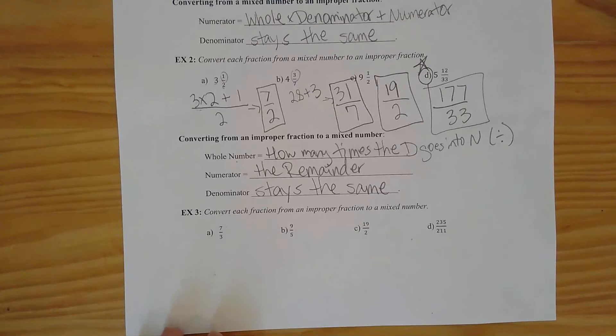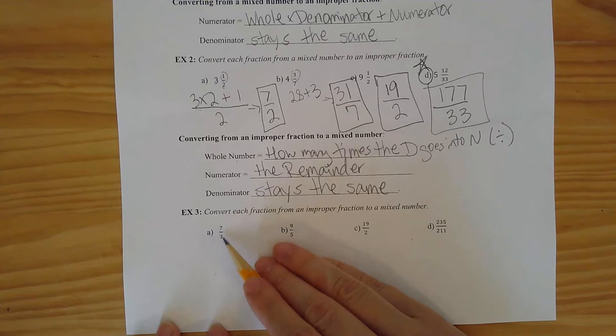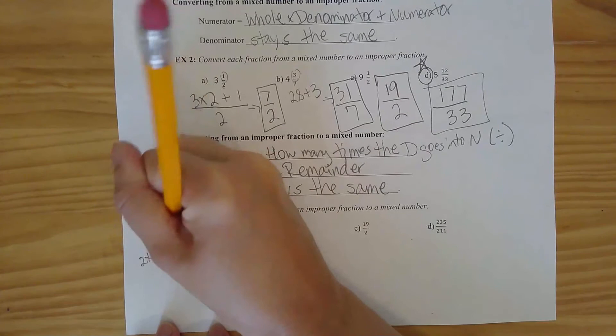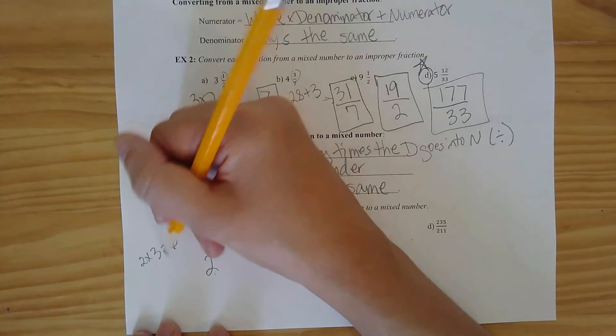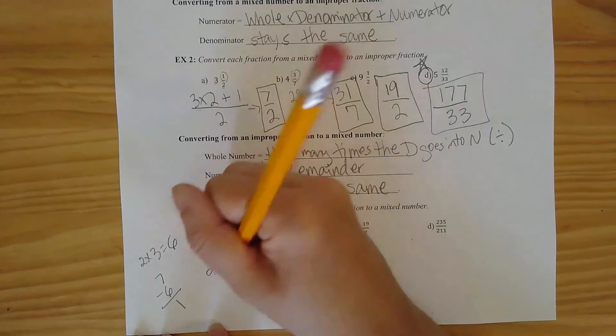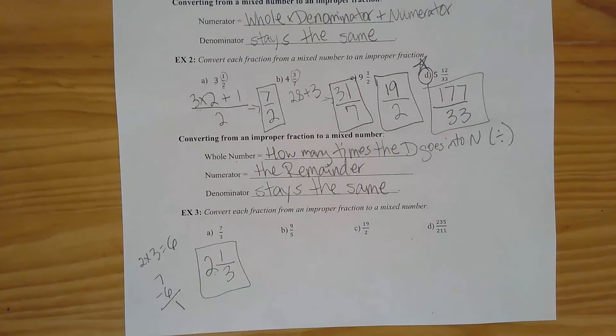The first one is seven-thirds. How many times does three go into seven? Three goes into seven two times. Two times three is six, so our remainder is seven minus six, which is one. One is the numerator, the denominator stays the same at three. So this would be two and one-third as a mixed number.